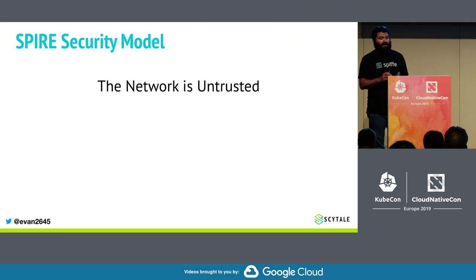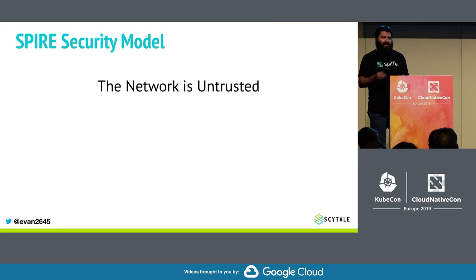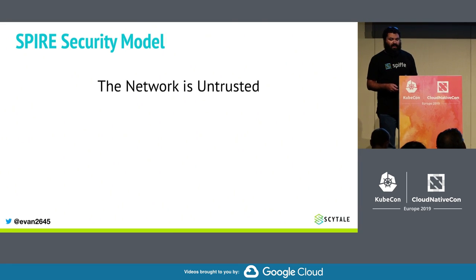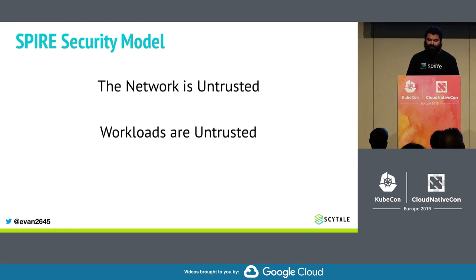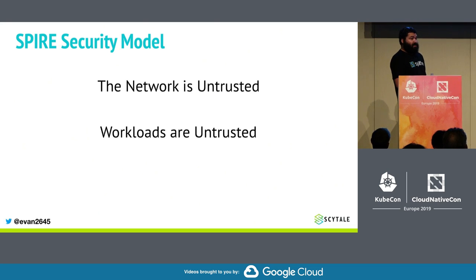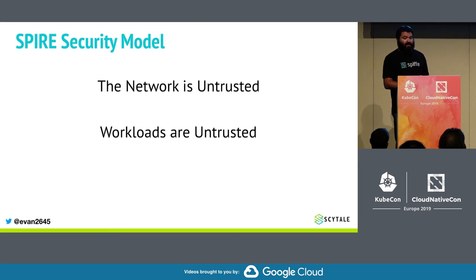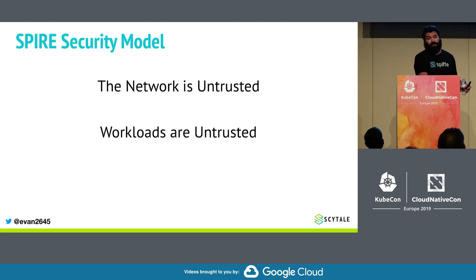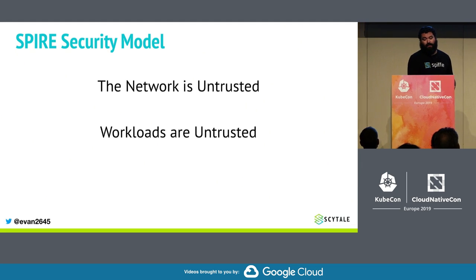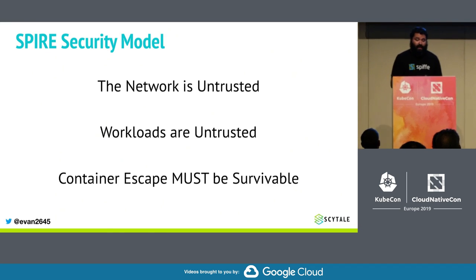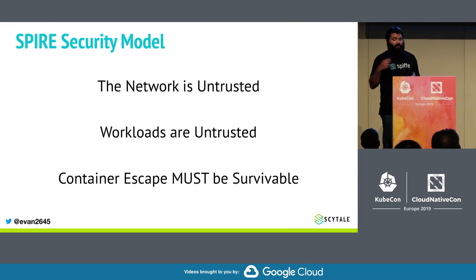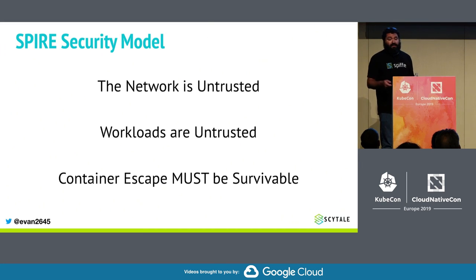First, SPIRE does not assume that the network is trusted. IP addresses and things like this are pretty much unusable as a security primitive in SPIRE — instead, we rely solely on cryptographic mechanisms. Second, the workload is also considered untrusted, because an application can be compromised and then abuse the Workload API or provide false information. So the Workload API must not trust any data provided directly by the workload. Finally, we design for node compromise — we expect that a compromised workload may escape a container, and when that happens, this evil node shouldn't be able to get or mint identities it shouldn't have access to.